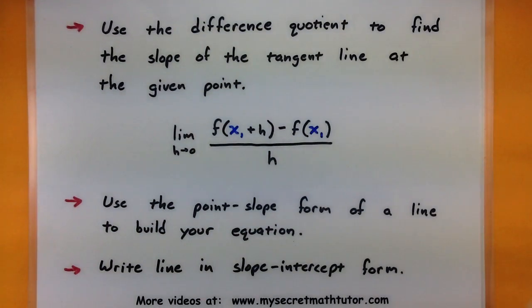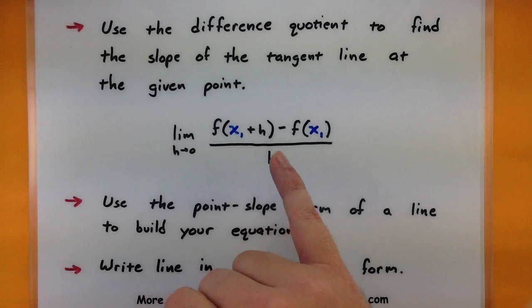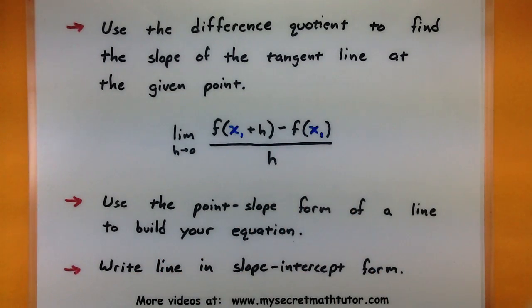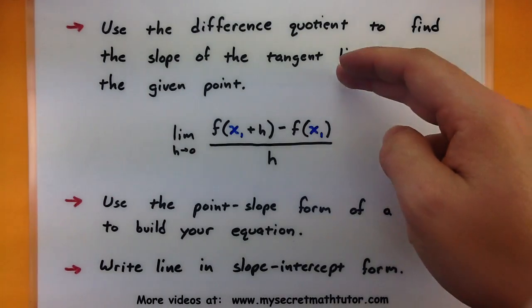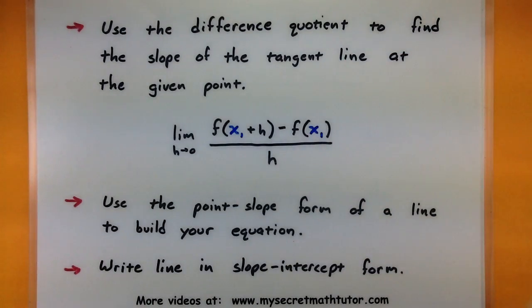Here's what we're going to need to do to find this tangent line. First we're going to use the difference quotient in order to find the slope of that tangent line. So we'll have to compute the limit of the difference quotient right here. Now notice in blue this x here is the x from our given point. Now once we're done computing that limit then we're going to use the point-slope form of a line to actually build the equation that we're looking for. And then the last step we usually take that and write it into slope-intercept form.